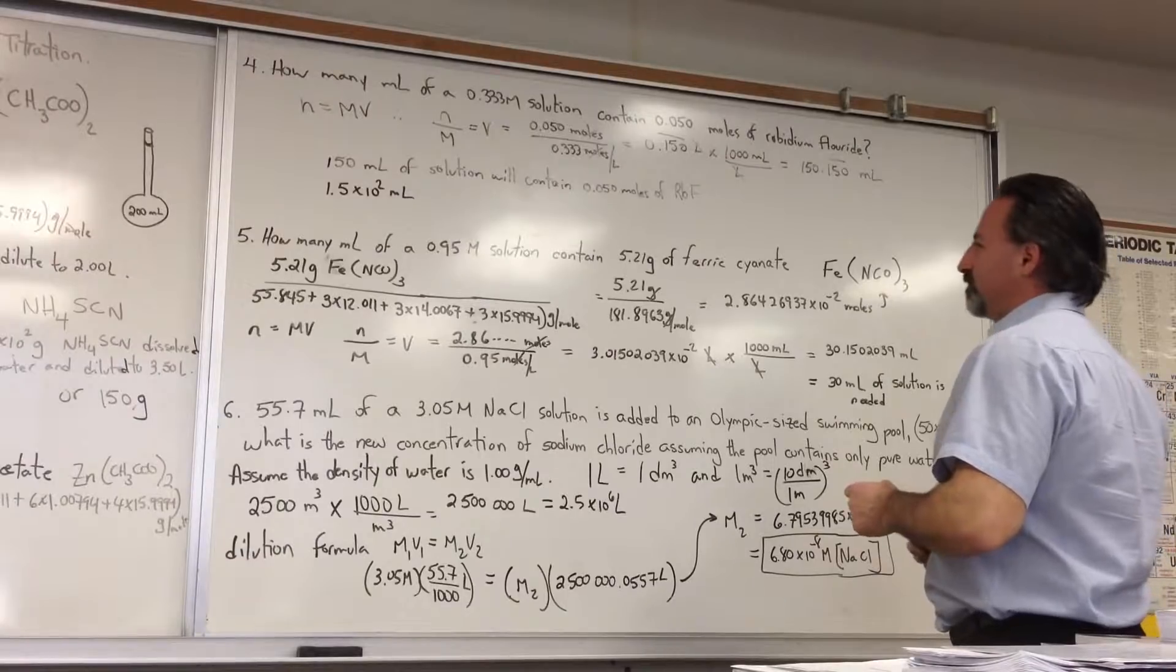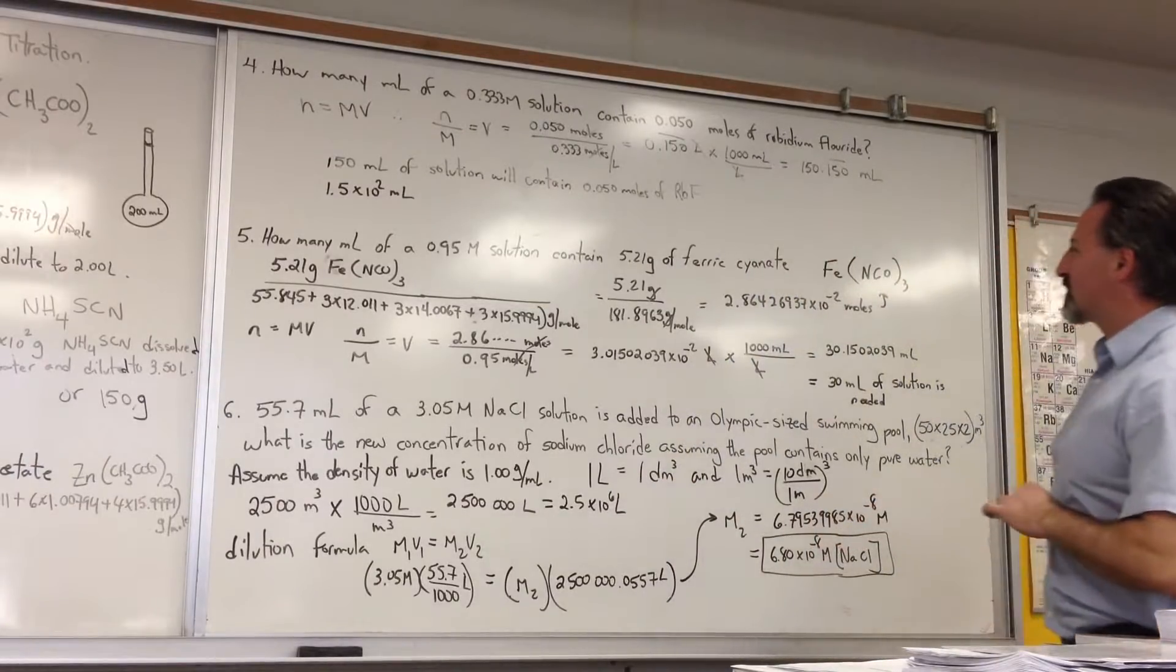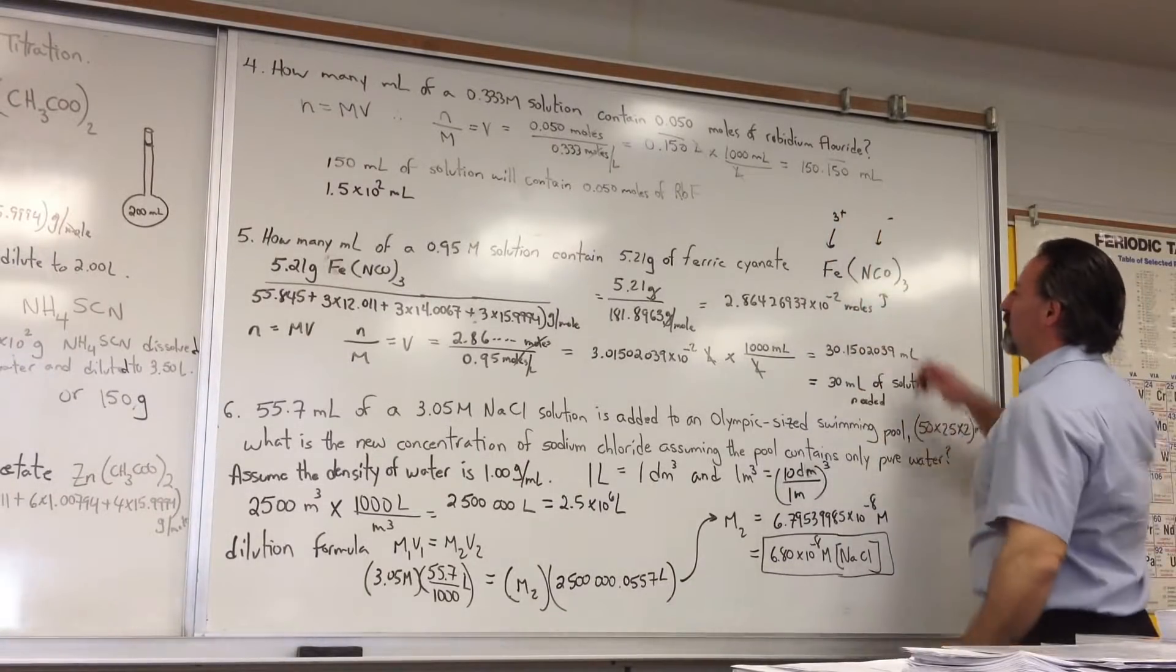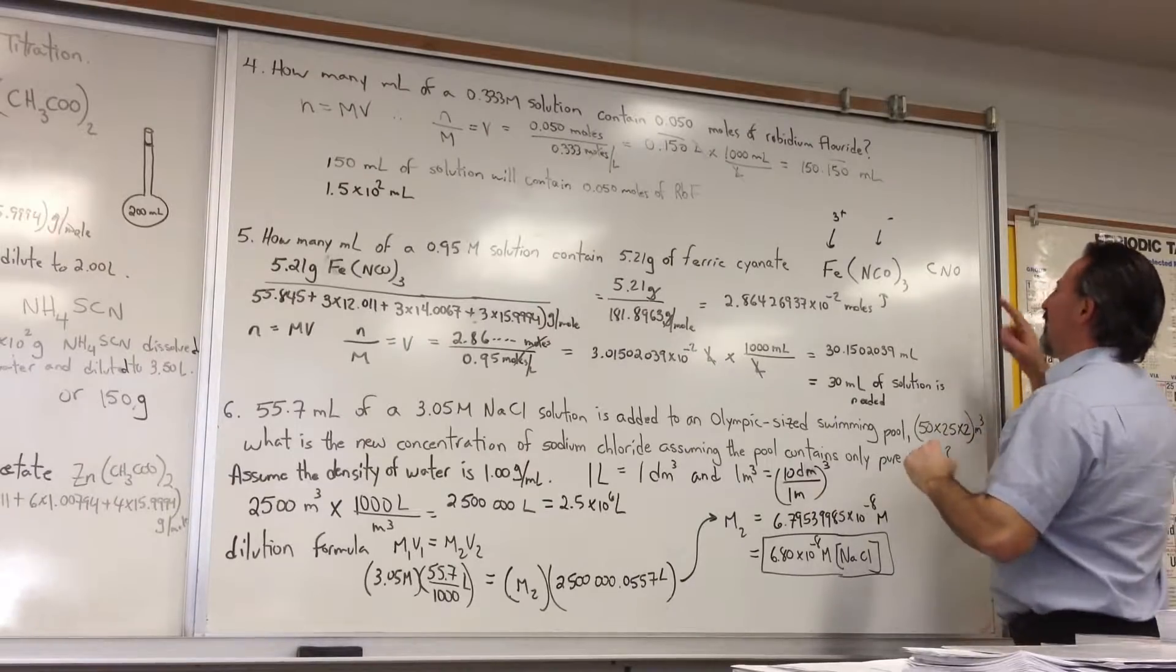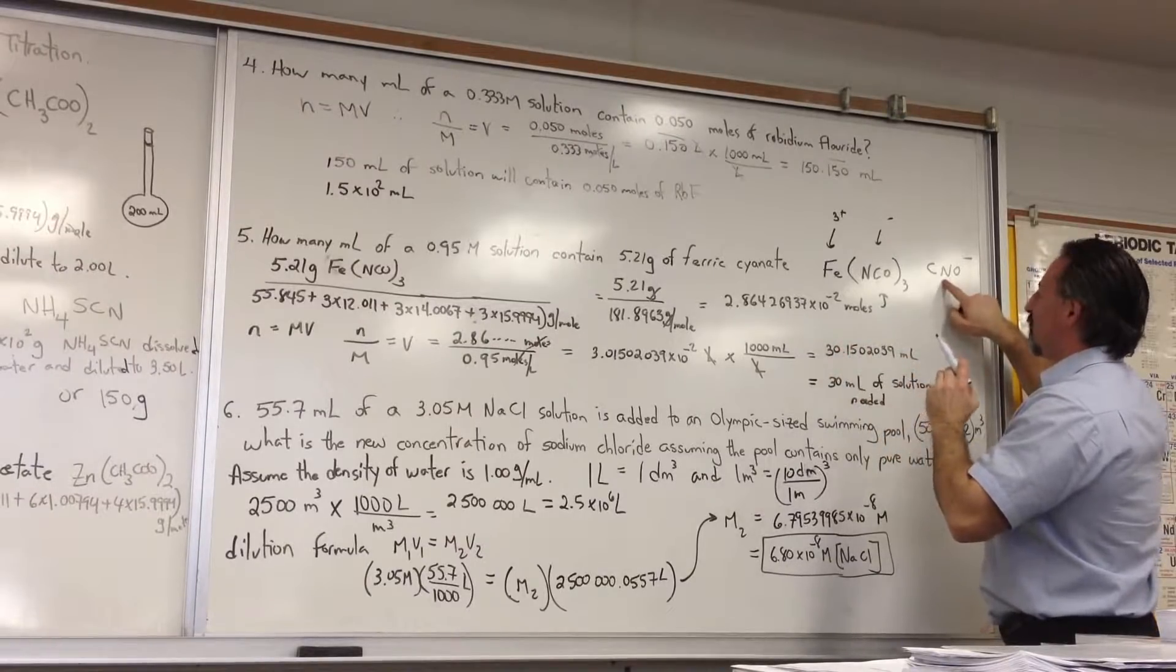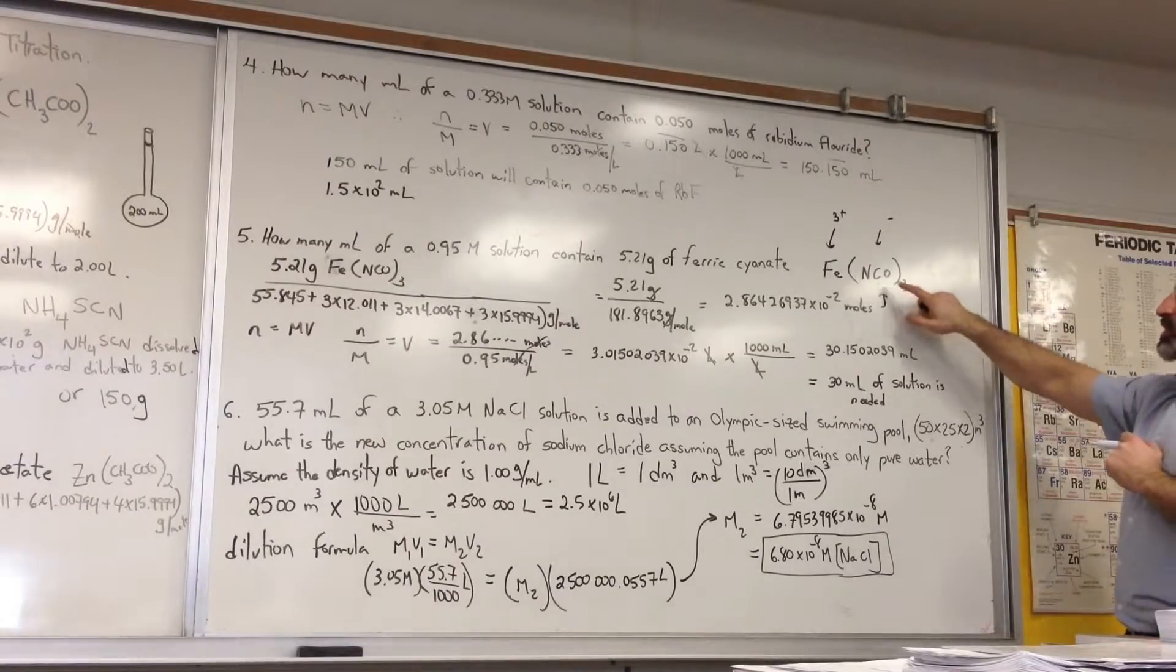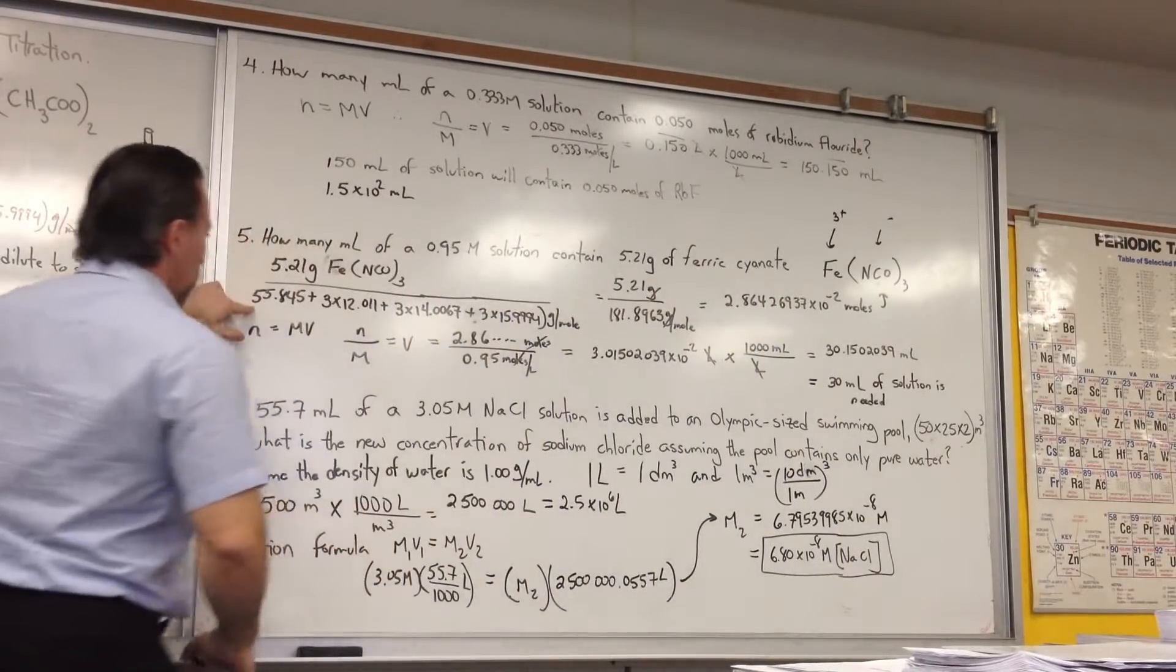The fifth question says, how many mls of a 0.95 molar solution will contain 5.21 grams of ferric cyanate? Ferric means it's a plus-3 charge. Cyanate is a minus-1 charge. Be aware of the fact that cyanate has the carbon in the middle. Very often you'll see people do that. That's actually fulminate. This is actually fulminate. If you look at the Lewis structure, nitrogen in the middle is fulminate. Carbon in the middle is cyanate. Cyanate has a minus-1 charge, so it takes three of them to combine with ferric. So we're told we have 5.21 grams of ferric cyanate.